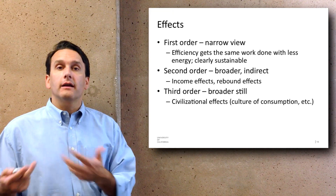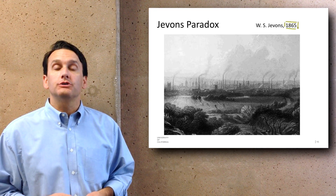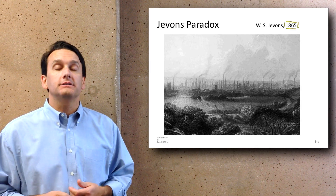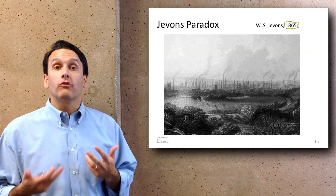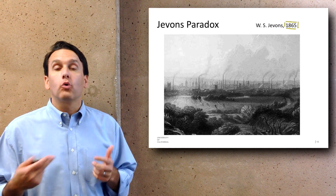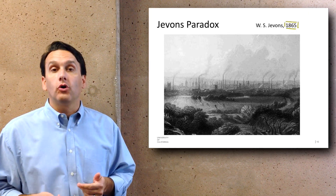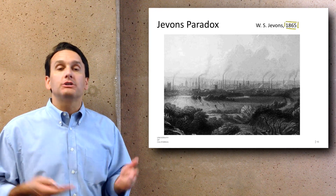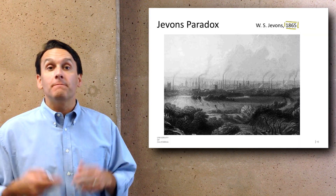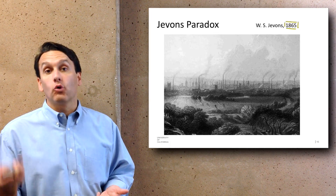An interesting finding in the area of indirect effects comes from the Jevons Paradox. In 1865, William Stanley Jevons was studying steam engines in England and expected to find that as steam engines became more efficient, the overall use of coal would go down. But what he found was the opposite: as steam engines became more efficient, more and more coal was being used — not because any given engine used more coal, but because more steam engines were being used across more industries, for more tasks, and for longer periods. Even though they were becoming more efficient, overall coal use went up. More efficiency led to more coal use instead of less.